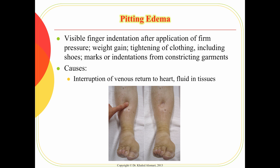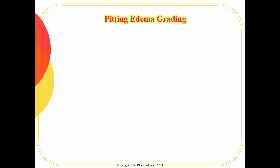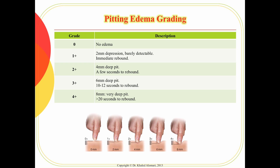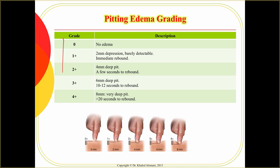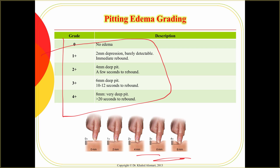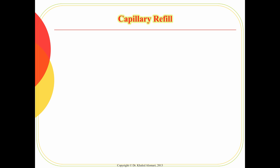Pitting edema — we talked earlier about the imbalance in pressure between the blood vessels and the extracellular fluid. Edema can indicate cardiovascular problems or liver problems, depending on albumin levels. The grading of edema goes from zero, when there is no edema, to higher numbers where the deeper and longer it takes for the indentation to return to normal shape.